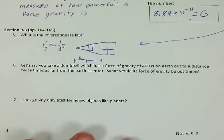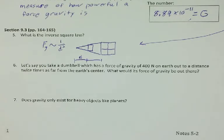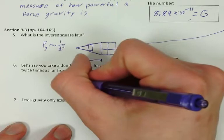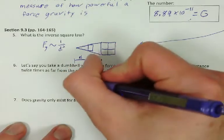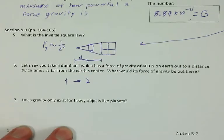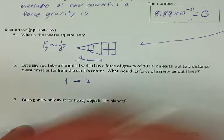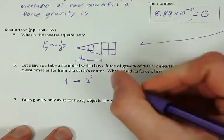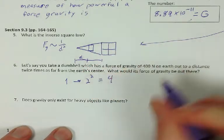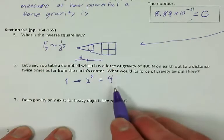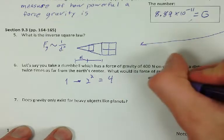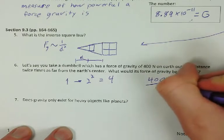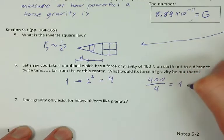So, let's say you take a dumbbell, which has a force of gravity on Earth of 400 newtons, out a distance that's twice as far from the Earth's center. So right now, it's some distance from the Earth's center. We're going to double that distance. What would its force of gravity be out there? So, we went from a distance of 1 to a distance of 2. But the inverse square law says it's not 2, it's 2 squared. So, it's actually 4. But it's the inverse, which means it's not 4 times bigger, it's 4 times smaller. So, it's 400 divided by 4, it's 100 newtons.